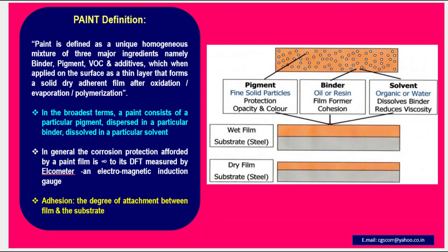Binder is made up of an oil or resin. It forms a film and offers cohesion to the paint. Solvent is either organic or water. Its role is to dissolve the binder, and it reduces viscosity.